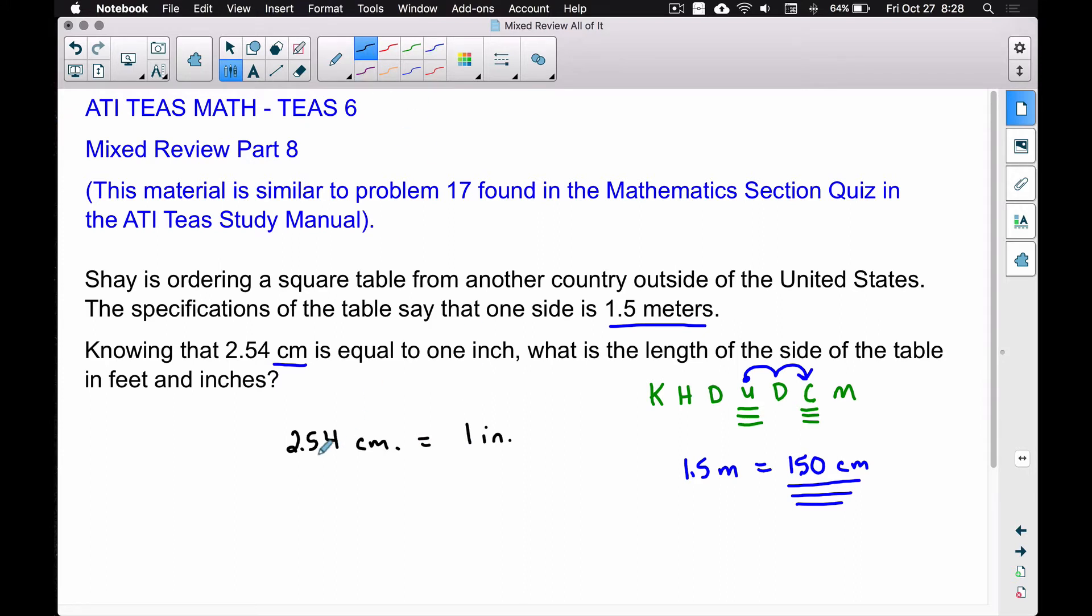Using this now, we can set up a proportion with 2.54 centimeters equals 1 inch. We know we have a 150 centimeter side length, which is the same thing as 1.5 meters. Now we can figure out how many inches that's going to be equal to. We're using some conversions - we're going to use a proportion to convert our metric to a US measurement. Just like any proportion, we can cross multiply and divide.